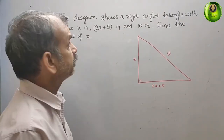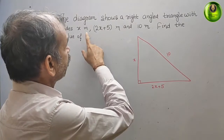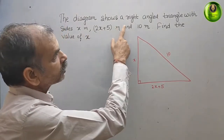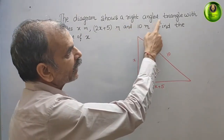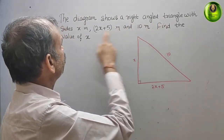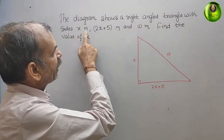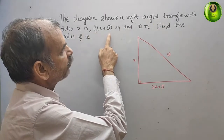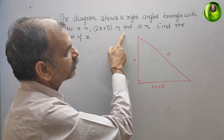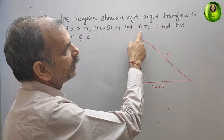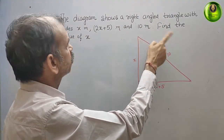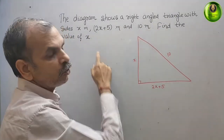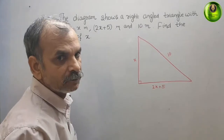Your question is: the diagram shows a right-angled triangle with sides x meters, 2x plus 5 meters, and 10 meters. Find the value of x.